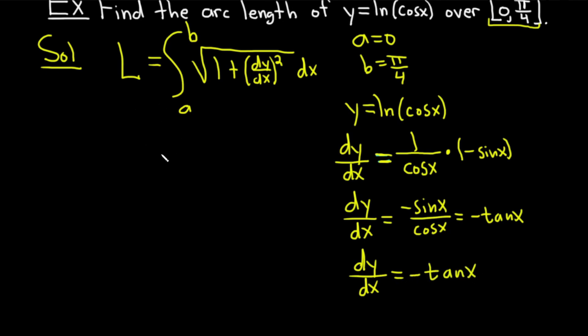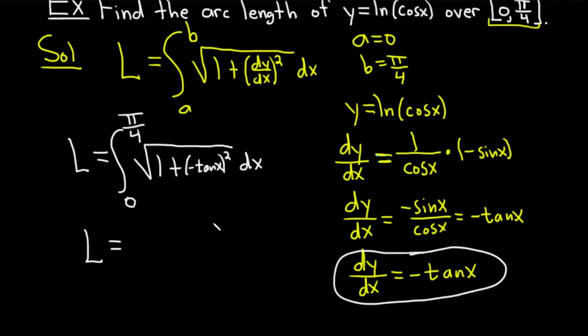Okay, so now we're going to plug everything into L. So we have L equals, and we're going from A to B. So A was 0 and B was pi over 4. And so this is going to be the square root of 1 plus, and then dy dx is negative tan x. And it's squared. So when you square negative tan x, the negative is going to go away. So it's the square root of 1 plus tan squared x.